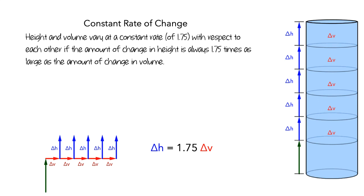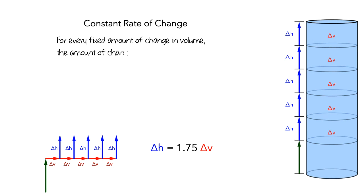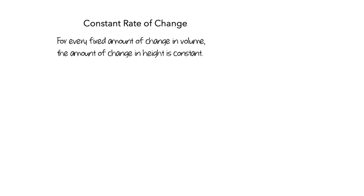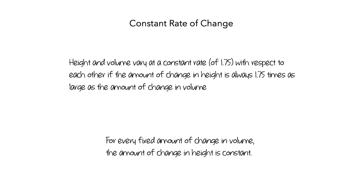So a consequence of our definition of constant rate of change is: for every fixed amount of change in volume, the amount of change in height is constant. We now have two ways to think about what it means for the height of the water to change at a constant rate with respect to the volume of added water.